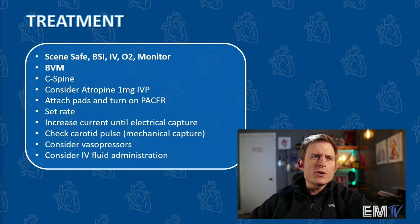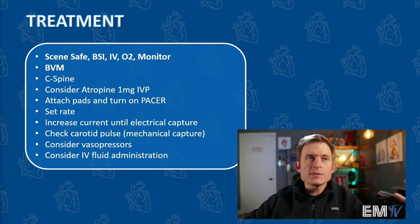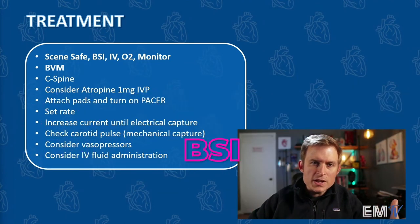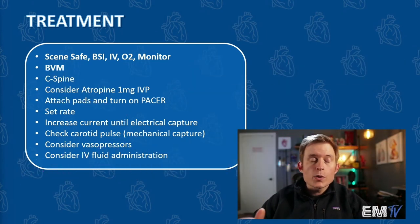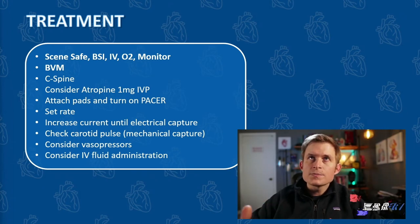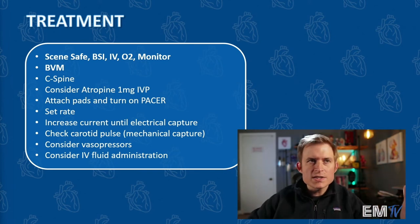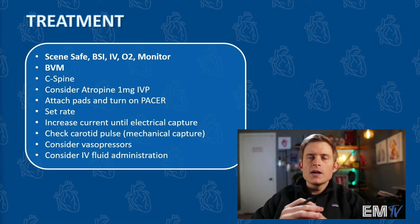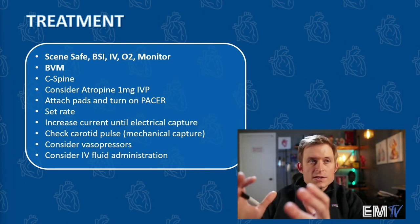Just like with all Static Cardiology cards, begin treatment by saying the mantra: Scene Safe, BSI, IV, O2, monitor. Next, ventilate this patient with a BVM using high-flow oxygen. Perform C-spine considerations — someone holding C-spine or applying a C-collar. Because the patient is bradycardic, consider atropine, 1 milligram IV push.